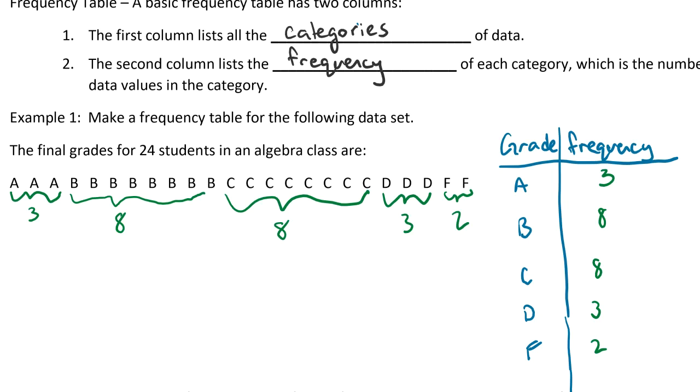Now at the bottom we're gonna put one more thing. We're gonna put total. So for total we literally just add all the frequencies up, and in this case we already knew there were 24 students, so we already know that total is gonna be 24.